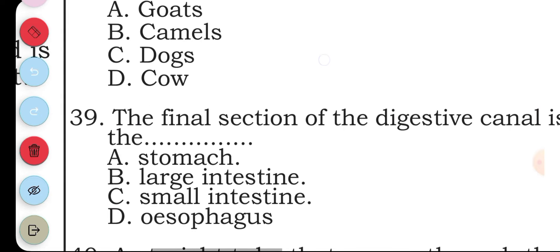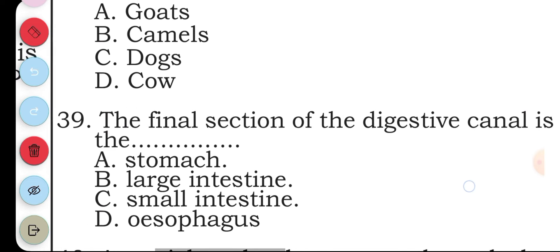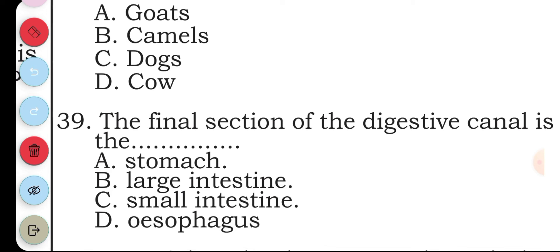Question thirty-nine: the final section of the digestive canal is the: A stomach, B large intestine, C small intestine, D oesophagus. The answer to question thirty-nine is the large intestine.